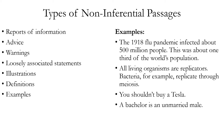Another example: you shouldn't buy a Tesla. This is a piece of advice or a warning, and it doesn't give any proof for that claim. You could make this into an argument by giving premises to support the conclusion that you should not buy a Tesla. A final example: a bachelor is an unmarried male. This is a definition of one meaning of the word bachelor. There is no evidence or proof for it, so it does not count as an argument.